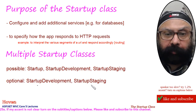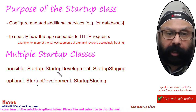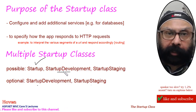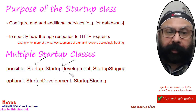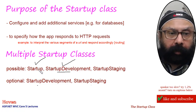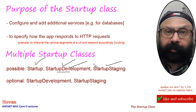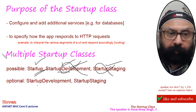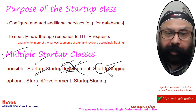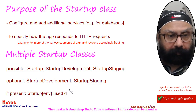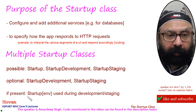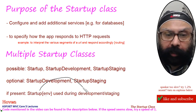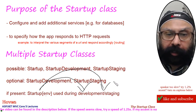StartupDevelopment and StartupStaging are optional. But if StartupDevelopment is present and the app is running under development, then the code in that class will be picked as the startup code. During production, if both classes are present, the environment-specific class will not be used — the base Startup class will be used. So various startup classes are allowed and their names are specified according to the environment under which you are running your application.